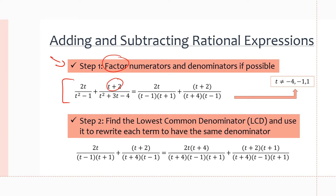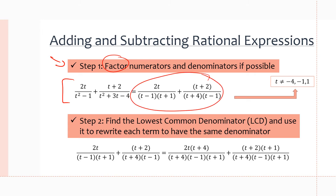For the second term, t plus 2 is already factored. And t squared plus 3t minus 4 is a simple trinomial. We want to find two numbers that multiply to negative 4 and add to 3. Since c is negative, our numbers will be of opposite signs. Those numbers are 4 and negative 1, so it factors as t plus 4 times t minus 1. Now we have our two factored rational expressions which add to one another.